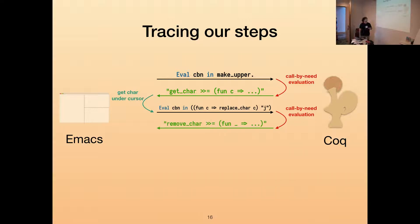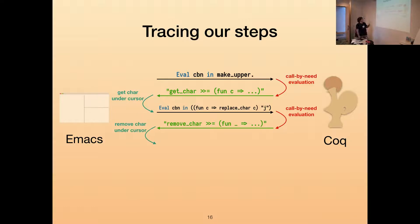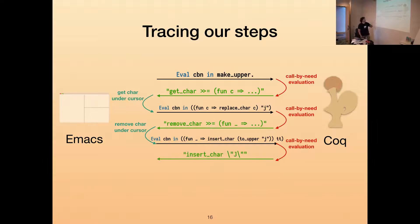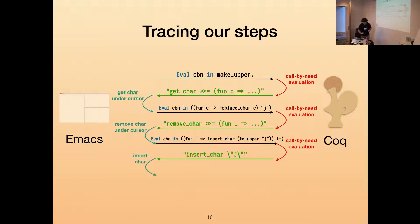Coq evaluates it one step and sends back that the first thing in the evaluation is remove_char, then monadic bind and some other continuation, because replace_char is defined as remove_char then insert_char. Emacs looks at this, parses it, removes the character under the cursor, and sends back the result — the same continuation with remove_char returning unit (tt in Coq). Emacs sends this vernacular to Coq for execution. Coq evaluates it and sends back 'insert_char capital J' as a string. The reason to_upper J returns capital J here is that Coq's call-by-need evaluation sees this is the thing to evaluate, normalizes it, and then Emacs inserts capital J, realizing that the macro execution is complete.